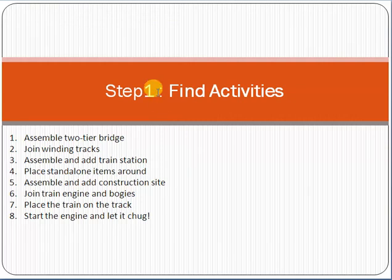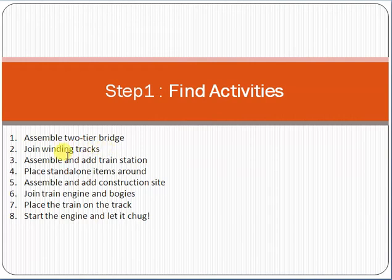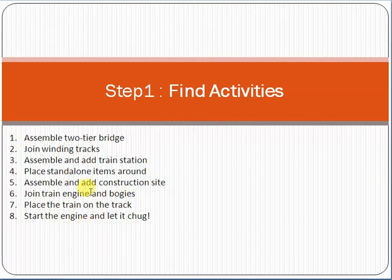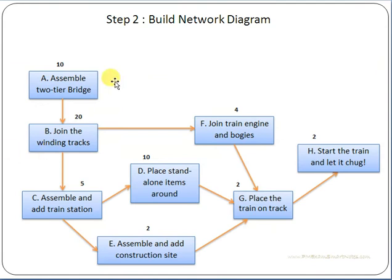Now let's take a dummy project — a rail track project. The activities are: assemble the two-tier bridge, join winding tracks, assemble and add train station, place standalone items, assemble and add construction site, join train engine, place the train on the track, start the engine, and let it go. These are the sample activities for this project.